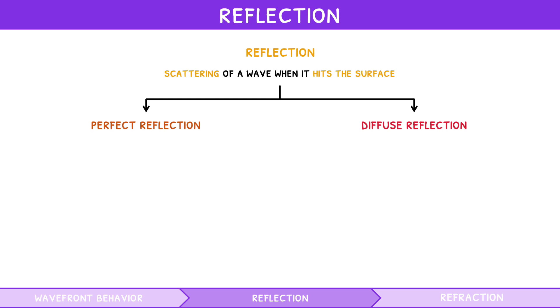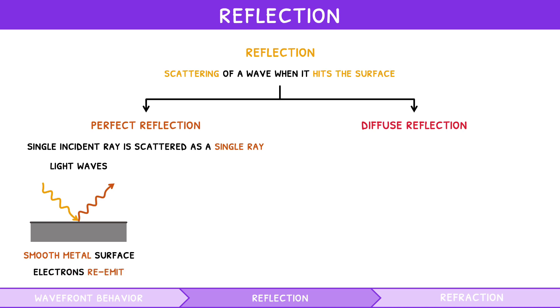Perfect reflection is when a single incident ray is scattered as a single ray. For light waves, this typically occurs with smooth, metallic surfaces. This is because free electrons in the metal re-emit waves that destructively interfere with the incident wave and produce a reflection. For sound waves, this typically occurs with smooth, hard surfaces. This is because the particles cannot absorb the energy and vibrate well, instead reflecting it.